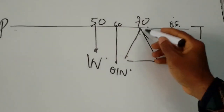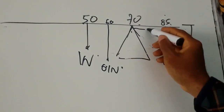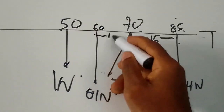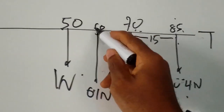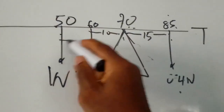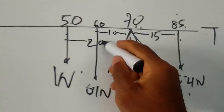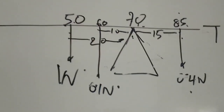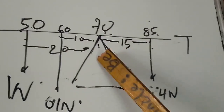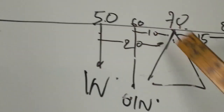The distance from the center of gravity to the pivot is 70 minus 50, which gives us 20. The distance from Q to the pivot is 70 minus 60, giving us 10. The distance from S to the pivot is 85 minus 70, giving us 15. All distances are measured to the pivot.